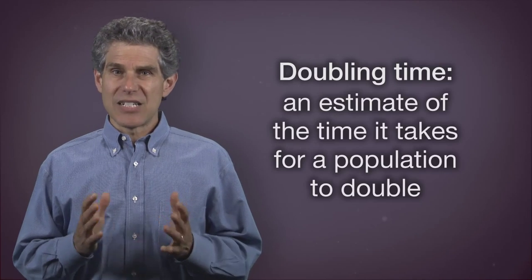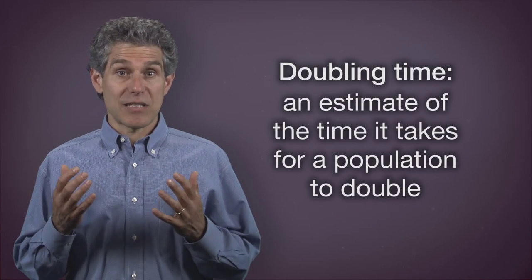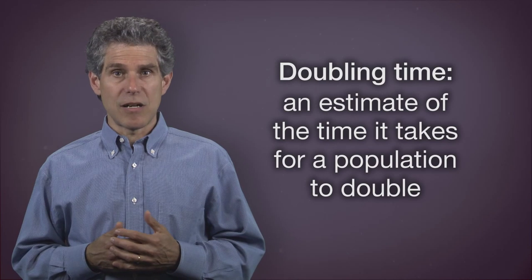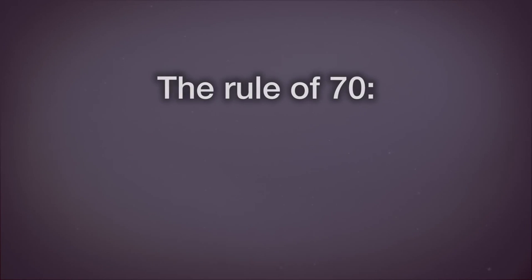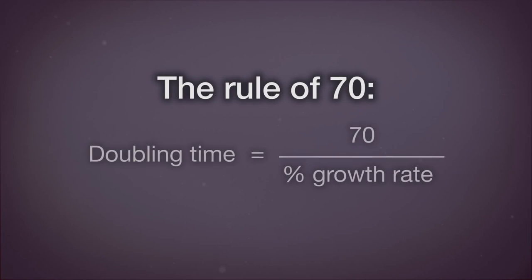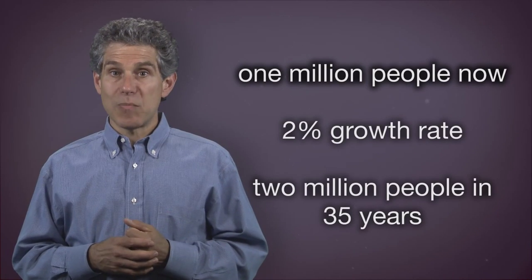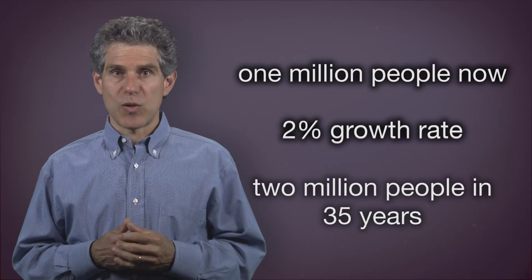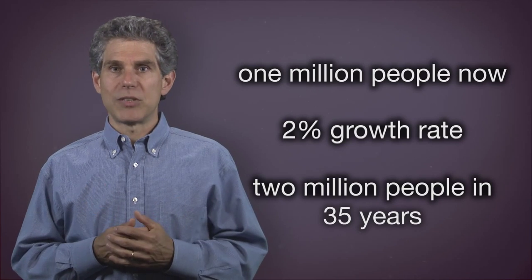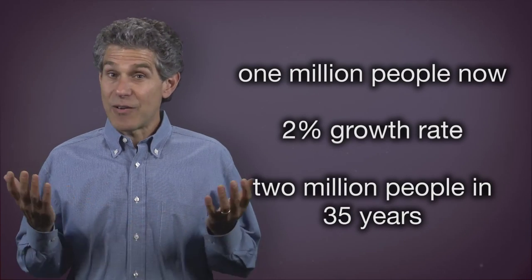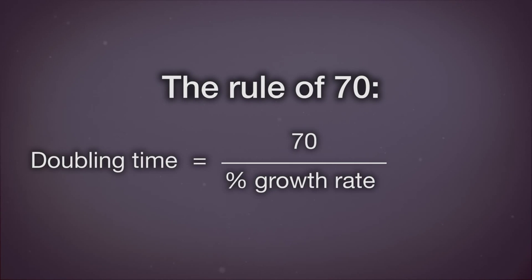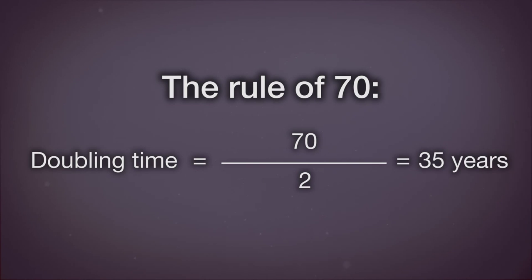Doubling time is a quick way to estimate the time it takes for a population to double in size. Doubling time is calculated using the rule of 70: doubling time equals 70 divided by the percentage growth rate. For example, a population of 1 million people growing at 2% per year will be 2 million people in 35 years. The rule of 70 says 70 divided by 2 — the 2% growth rate — equals 35 years.